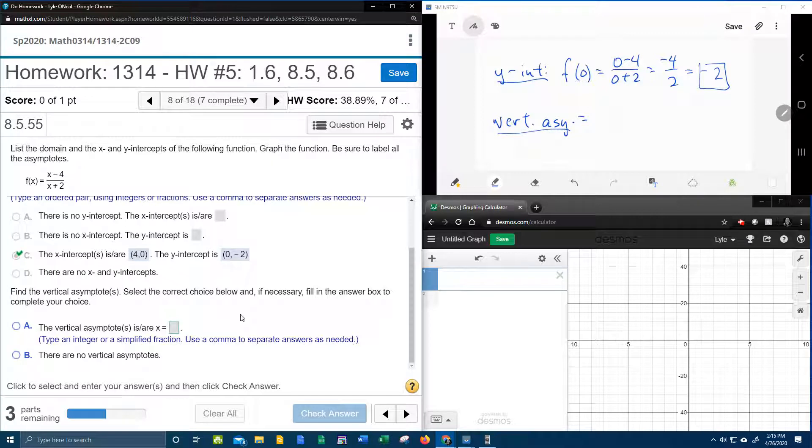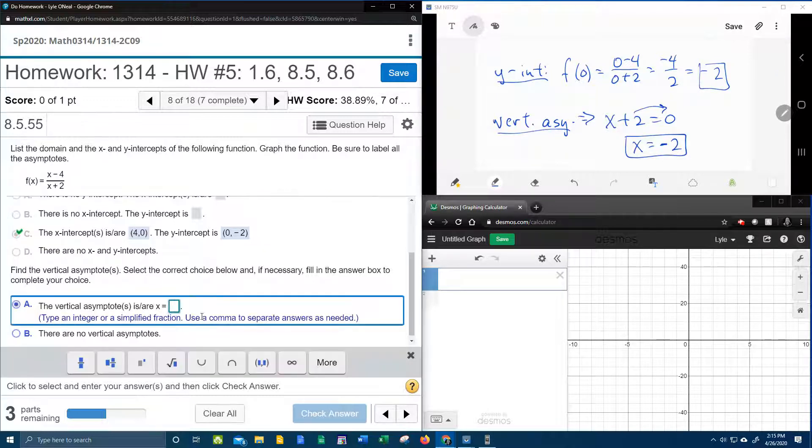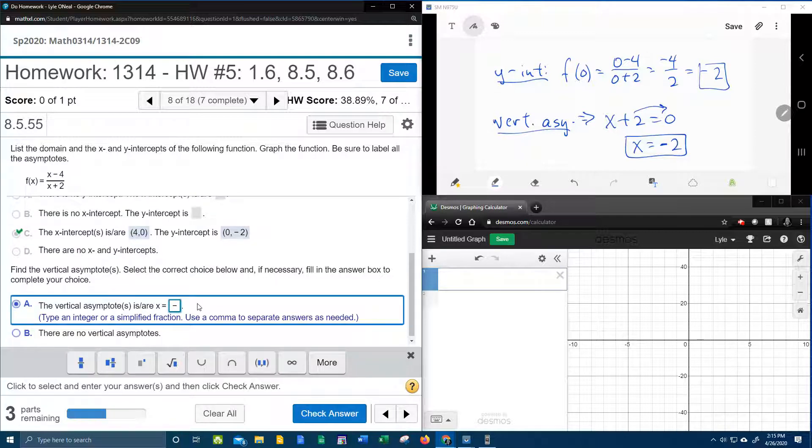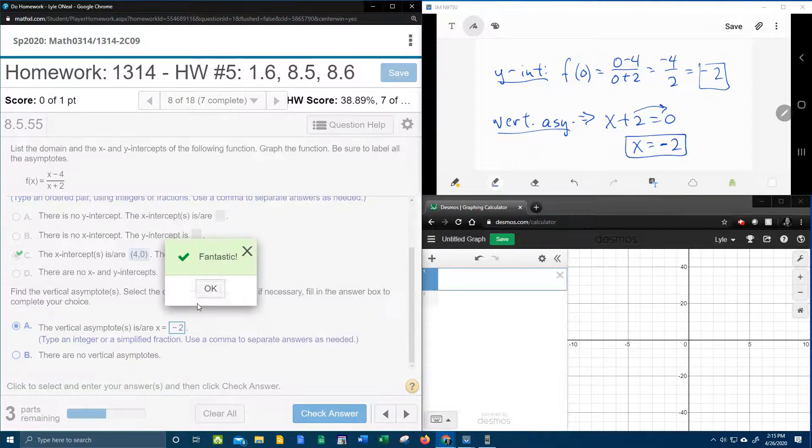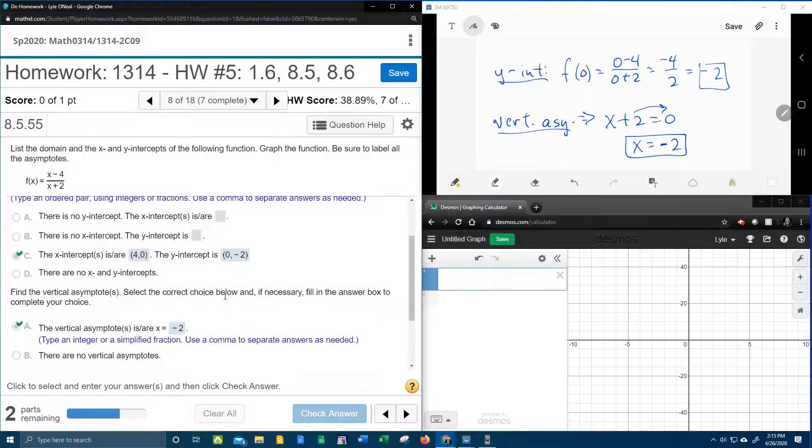We're looking for vertical asymptote. It's going to be x plus 2 equal to 0. Moving the 2 over gives me x is negative 2, and that should be our vertical asymptote. Notice they already give me the x equal, so I just need to put negative 2.